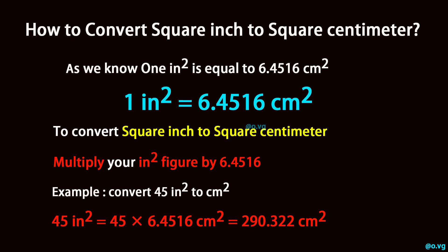To convert square inch to square centimeter, multiply your square inch figure by 6.4516.